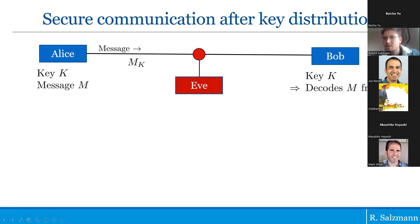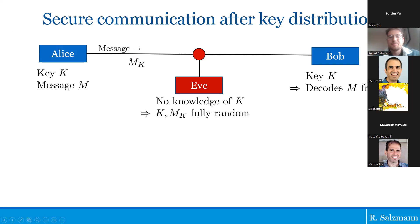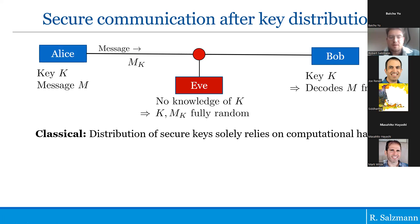If Eve has no knowledge of the key K, then both the key and the encrypted message are fully random to her and she has no means to understand the message. We're interested in how you could distribute those keys. Classically this distribution only relies on computational hardness.